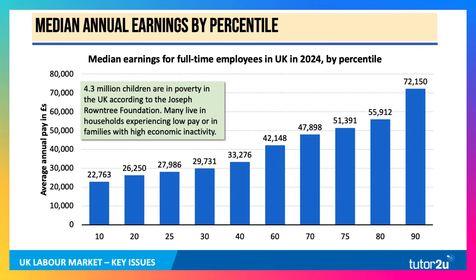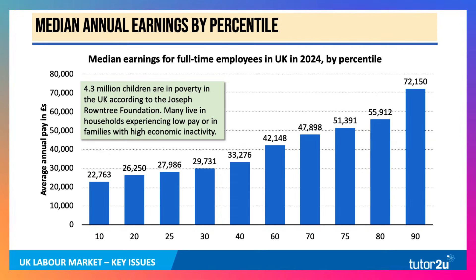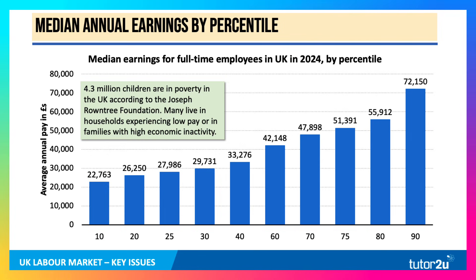This is linked to the high level of relative poverty in the UK. According to the latest data from the Joseph Rowntree Foundation, 4.3 million children are living in relatively poor households. Many are living in families experiencing low pay — where one or more people have a low-paid job — or in families where people aren't in work, with high economic inactivity.